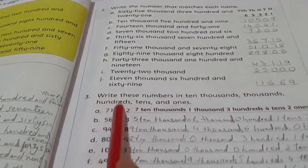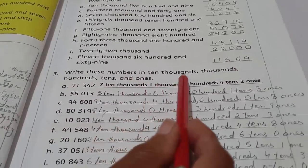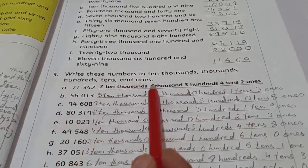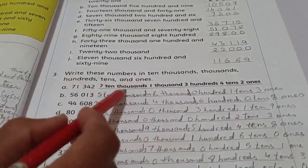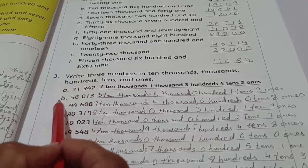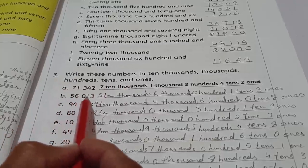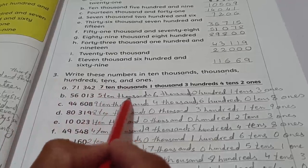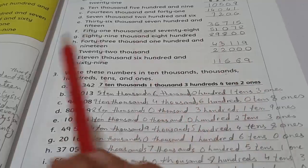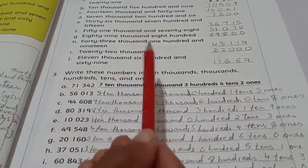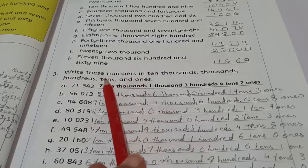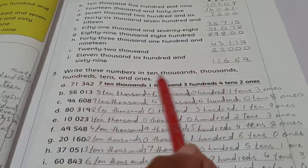Now come to question number 3: Write these numbers in ten thousands, thousands, hundreds, tens and ones. We have to represent their names according to their place values. First has been done for you, so we are starting from B. 56013 - that's five ten thousands, six thousands, zero hundreds, one tens, and three ones. We have to represent them according to their values: ones, tens, hundreds, thousands, and ten thousands.